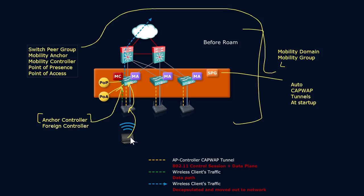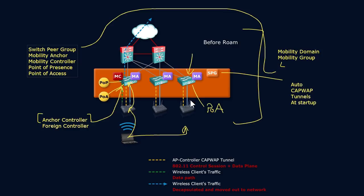When the device roams and is now associated with a third access point — which is associated with a third controller, a mobility agent associated with the same mobility controller, part of the same switch peer group, mobility group, and mobility domain — this new controller defines a new point of access. Now we need a CAPWAP tunnel established between the two, which will be automatic because we already have a switch peer group, and the client's point of access moves through this new physical controller and control module.